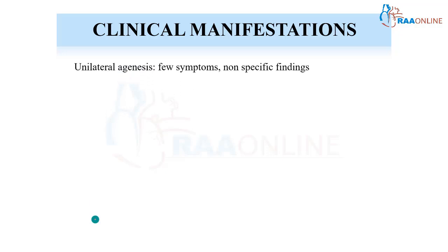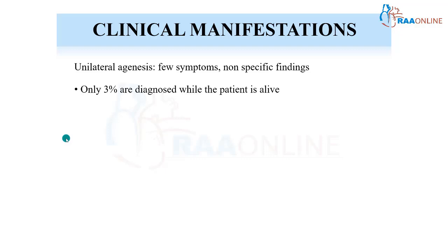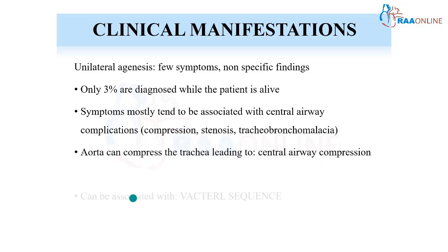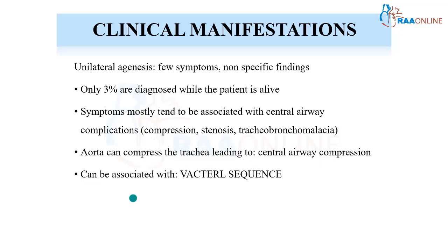With unilateral agenesis, there can be some non-specific findings. As mentioned in the textbook, only 3% are diagnosed while the patient is alive — meaning if a person never had an X-ray or investigation during their entire lifespan, or if clinical examination wasn't done in detail, we might miss a unilateral pulmonary agenesis. Most symptoms are going to be associated with involvement of other systems.